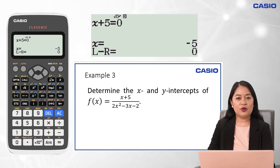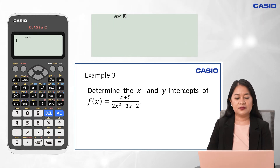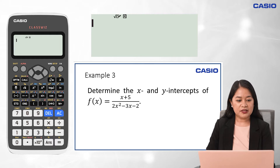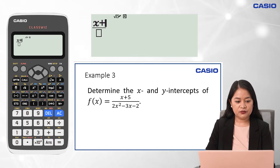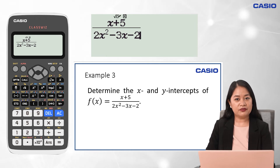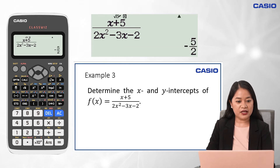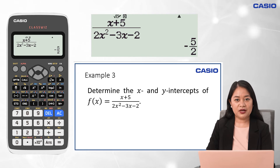Next, to identify the y-intercept, substitute 0 to x of this given rational function. Using Casio Classways, the Calculate menu is needed. Input the rational expression: press the fraction key, input x plus 5, right arrow key, 2x squared minus 3x minus 2. Then press Calc and input 0 for the value of x, then press the equal sign twice. Therefore, the y-intercept is negative 5 halves, or the graph passes through the y-axis at point (0, negative 5 halves).